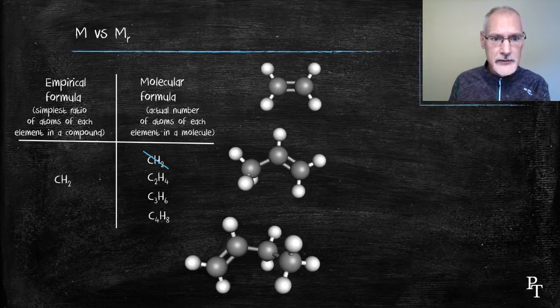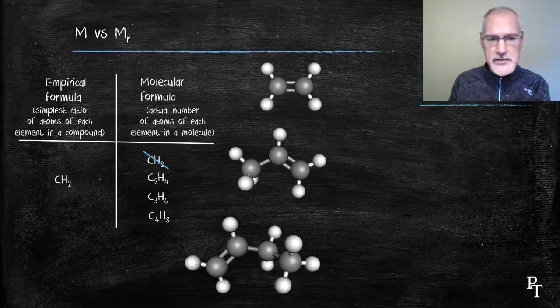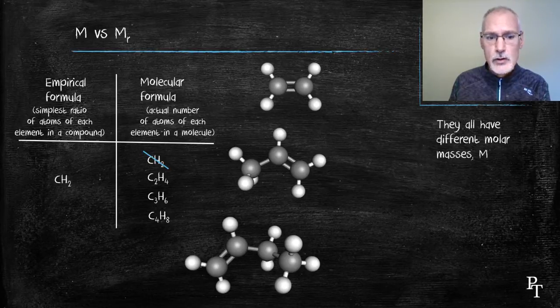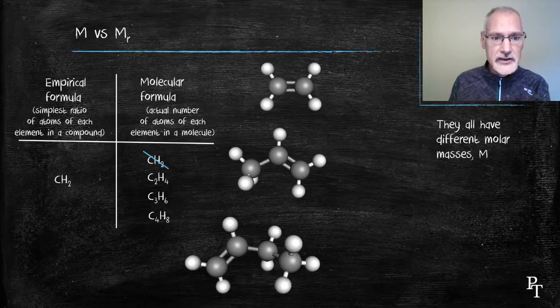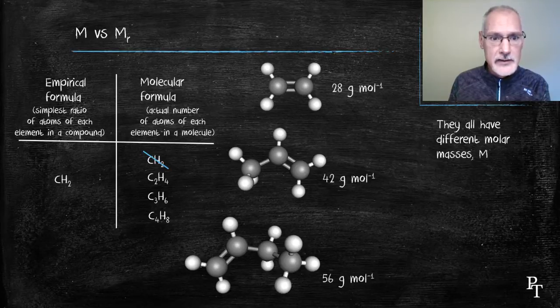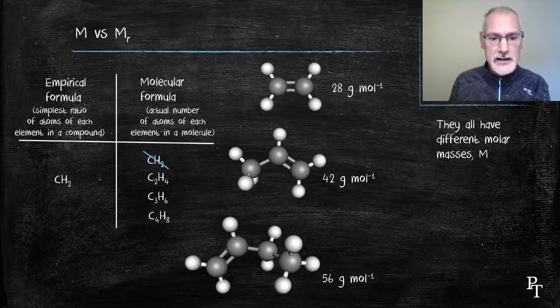What differentiates these compounds from each other? One of the ways you could differentiate them would be to look at their molar masses. Each one of these has its own unique molar mass based on the number and types of atoms that are present. Using the periodic table, I've listed the molar masses of these substances.